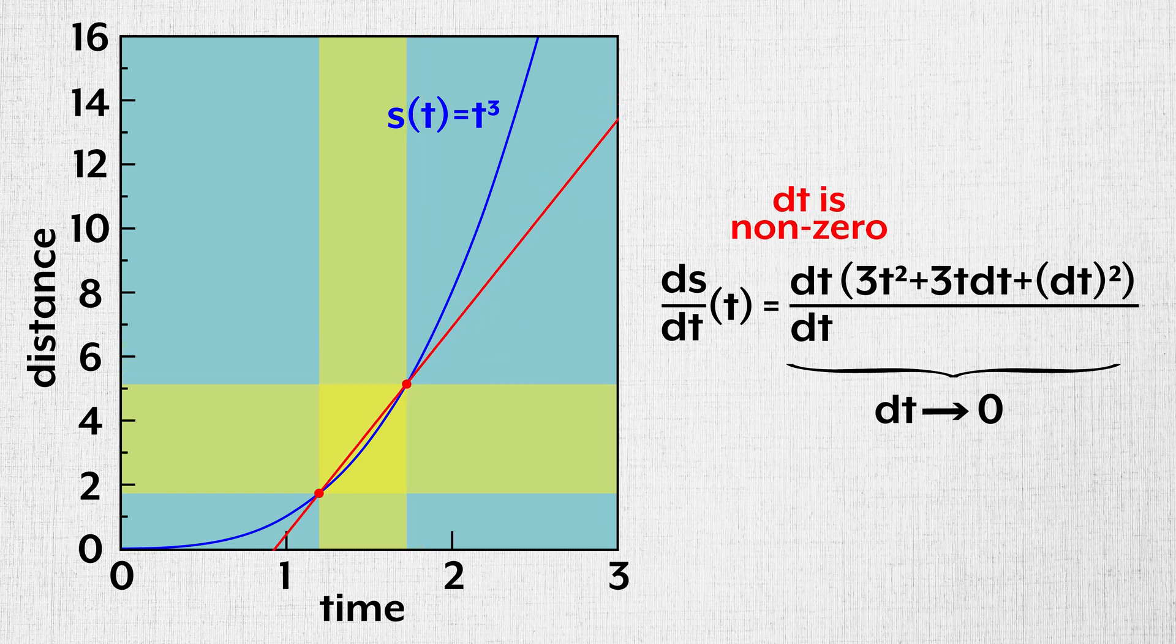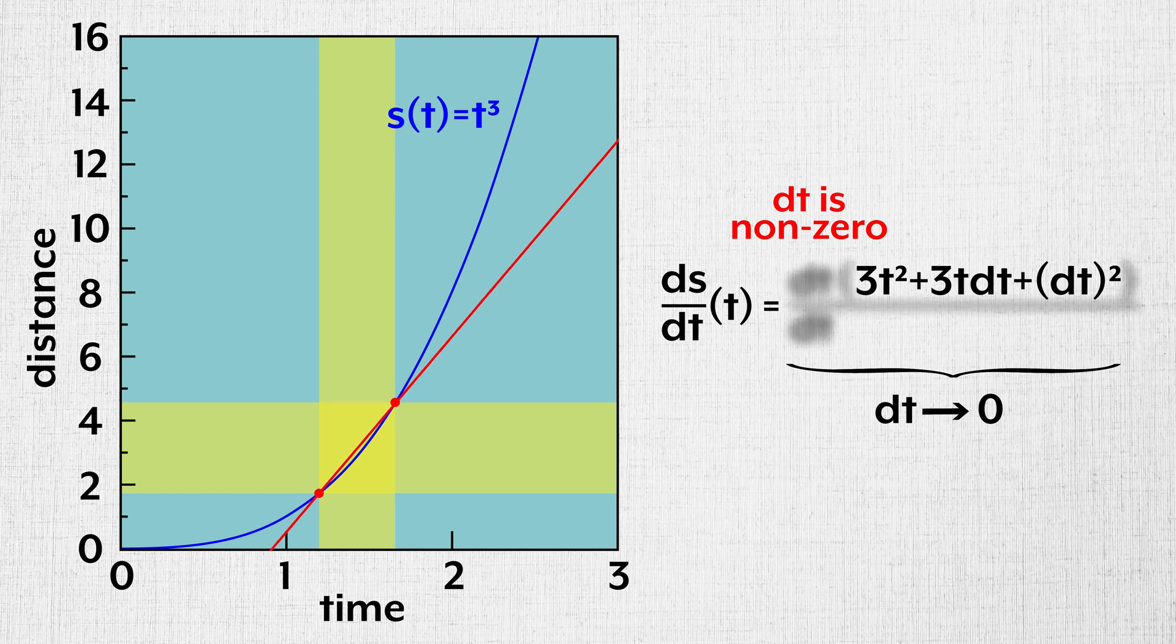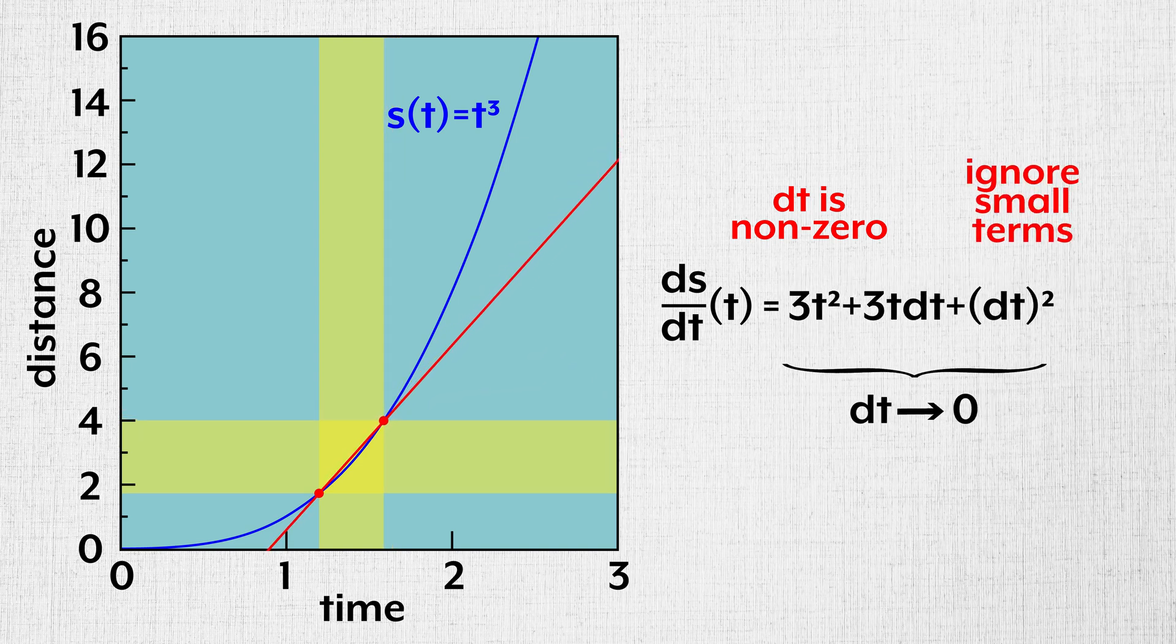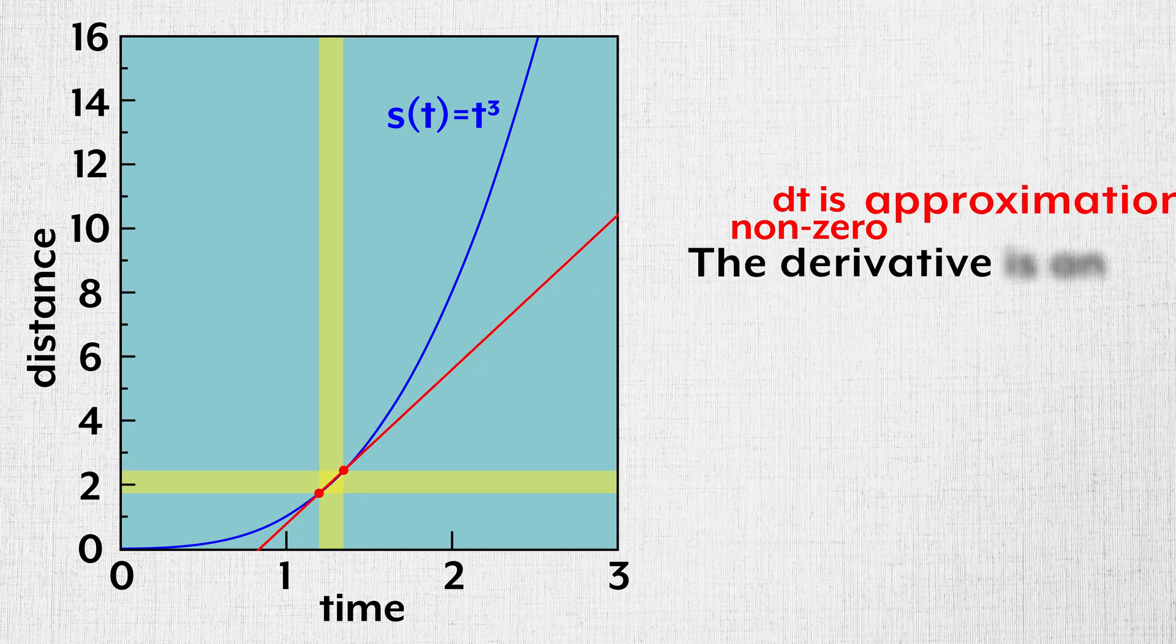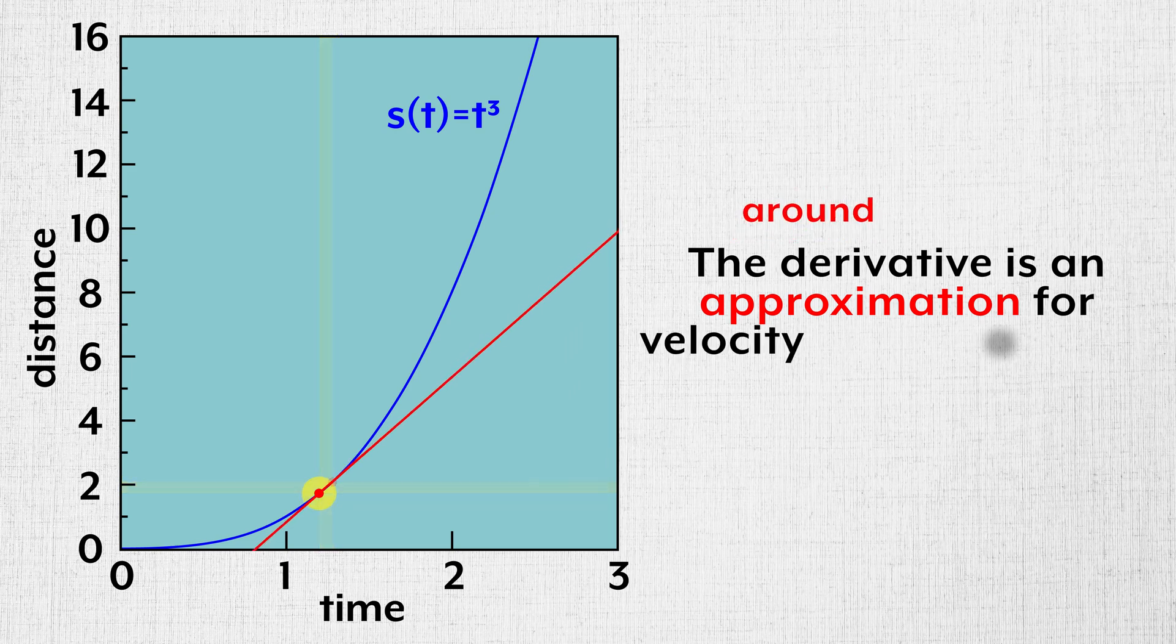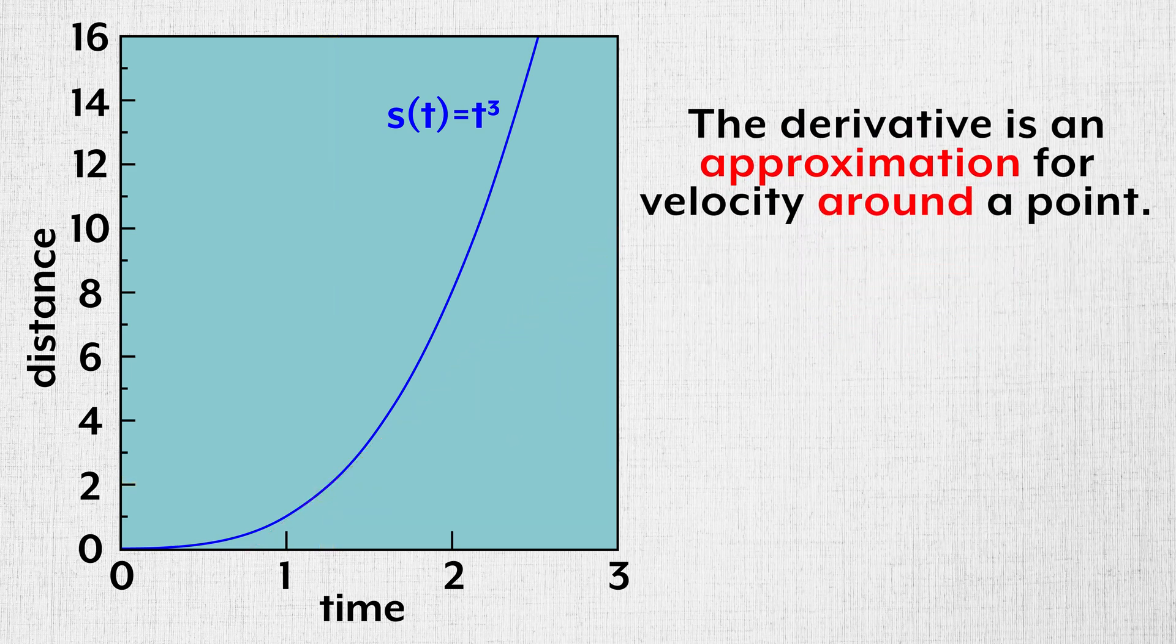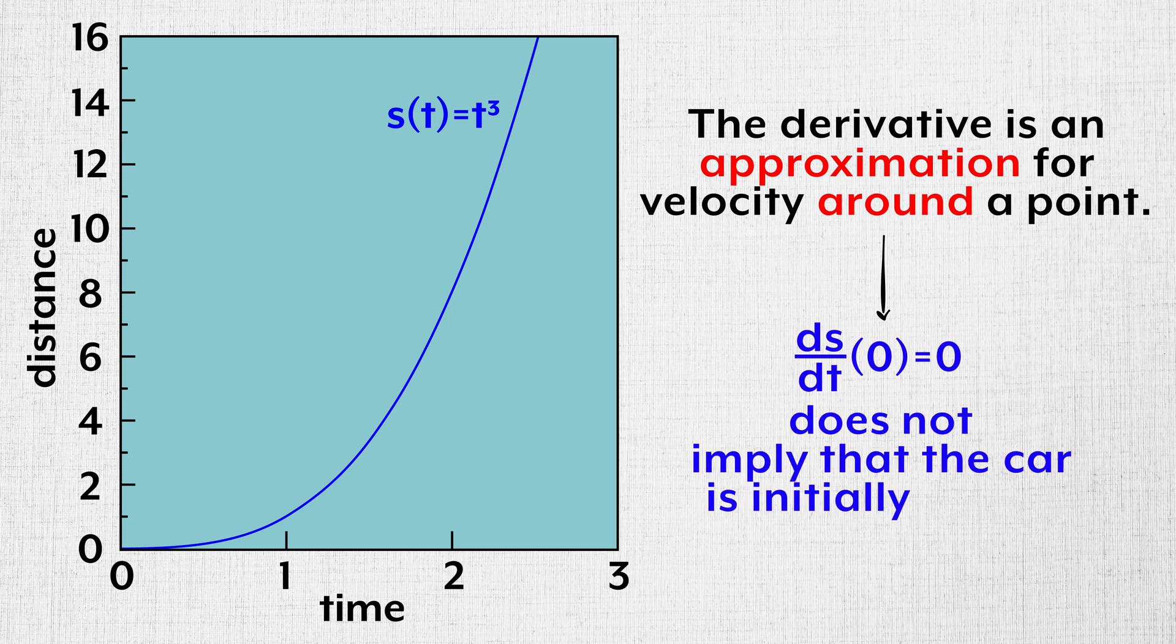If we assume that dt is nonzero, we can simplify this. And if we ignore the vanishingly small terms, we can simplify it further, giving us a derivative of 3t squared. The derivative is an approximation for velocity around a point. These highlighted words are important, because they mean that a derivative of zero at t equals zero does not imply that the car is initially static.